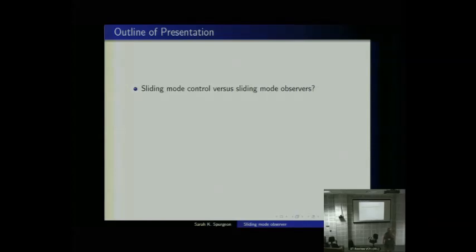If we think in terms of linear control theory, we can design a state feedback controller based on some nominal AB state-space system. We know that if we take the equivalent A-transpose, C-transpose system, we can design an observer using exactly the same theoretical approach. So in linear control theory, the state feedback control problem and the observer problem are highly aligned.